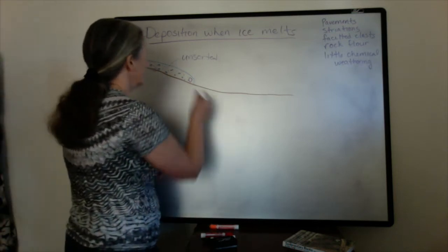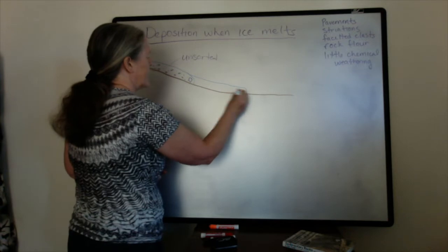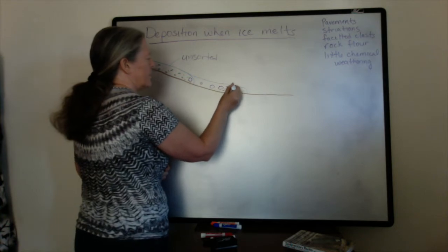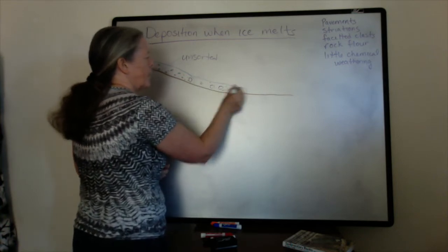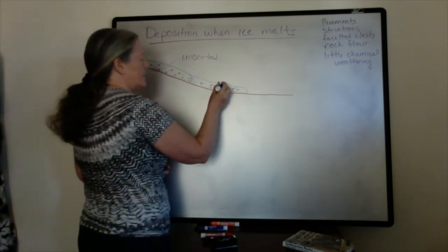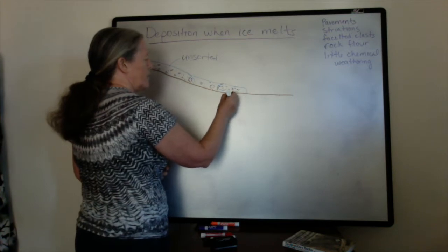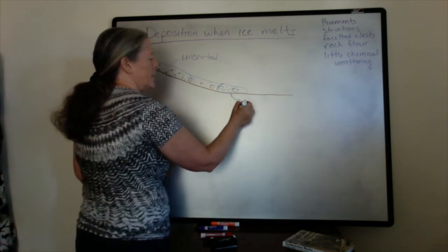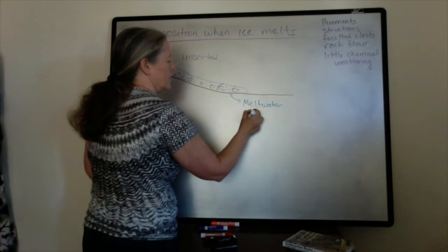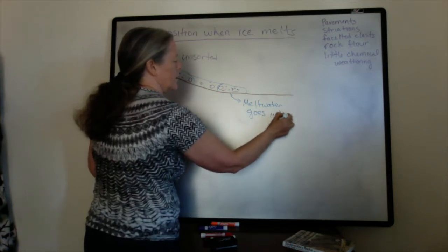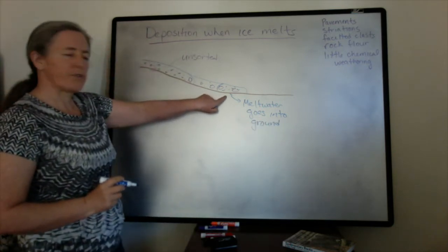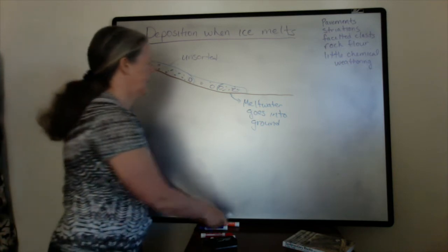But sometimes, let's extend our glacier onto this flat area here. So we have grains of all sizes here. If you get a chunk of the ice just melting and the liquid water filters in, so this is the melt water, it goes into the ground water here.